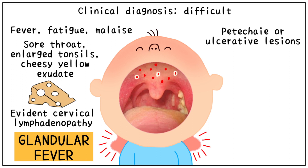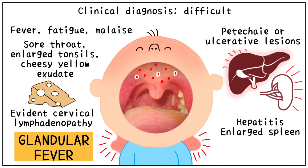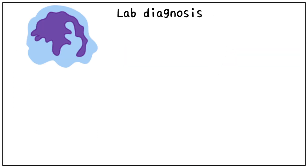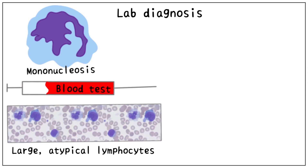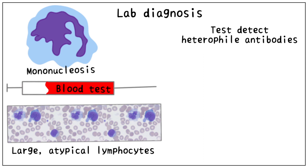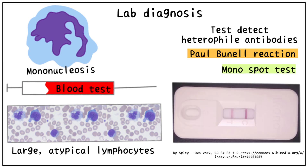Systemically, infectious mononucleosis causes hepatitis and enlargement of the spleen. The condition is called mononucleosis because there is an increase in a particular type of mononuclear white blood cell, i.e., lymphocytes. Blood tests show the presence of unusual or atypical lymphocytes. Other tests are used to detect heterophile antibodies, which are the antibodies produced by our immune system in response to the EB virus. The Paul-Bunnell reaction and mono spot test are used to diagnose infectious mononucleosis.